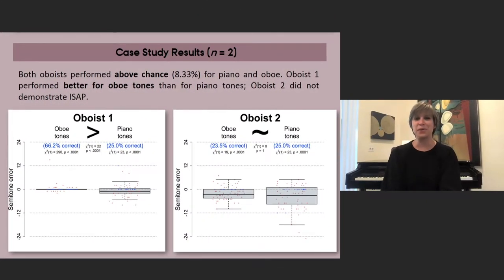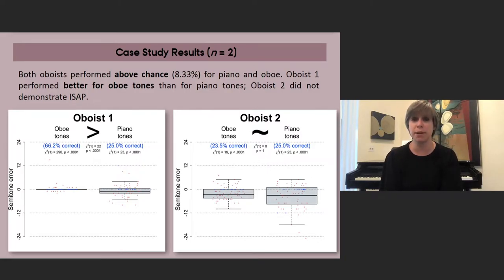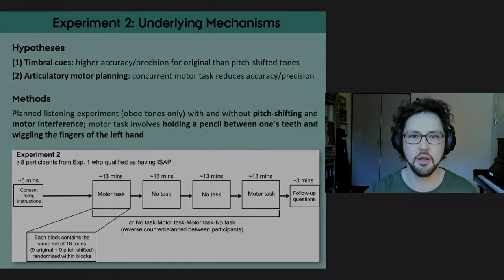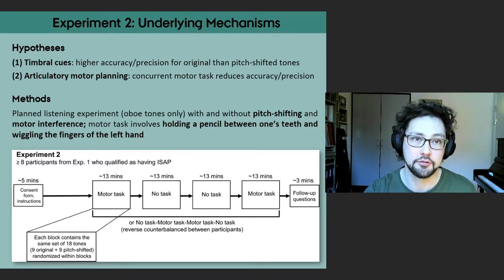Our case studies found one person with ISAP — oboist one, who played that lovely opening note of this presentation — and one person without, oboist two. Note that they both showed weak quasi-absolute pitch by performing above chance for both oboe and piano tones, but oboist one could identify oboe notes more accurately than piano notes and with smaller errors, as shown on the slide.